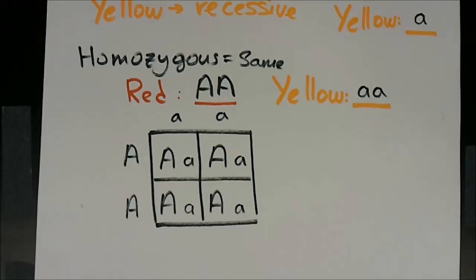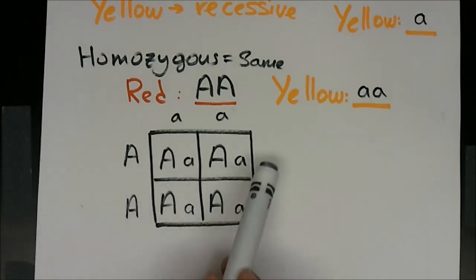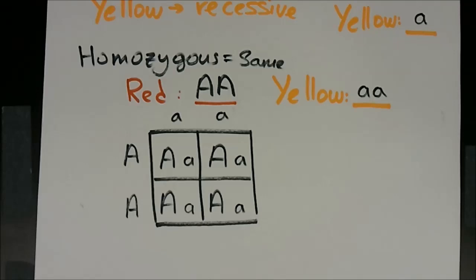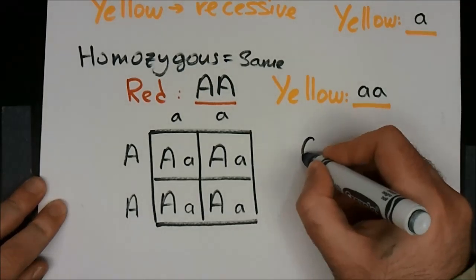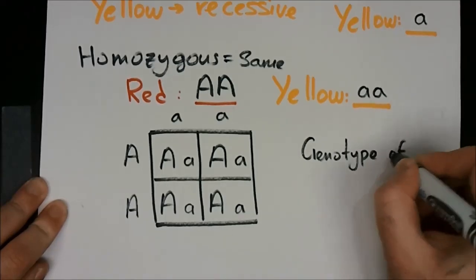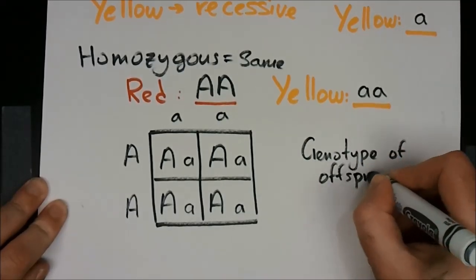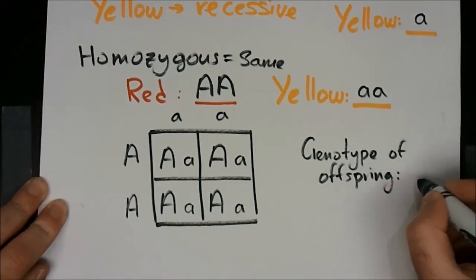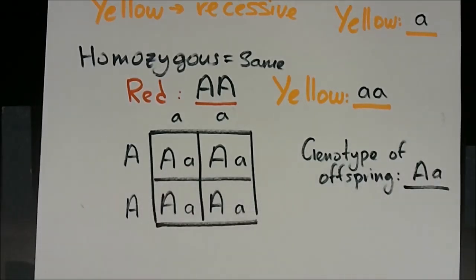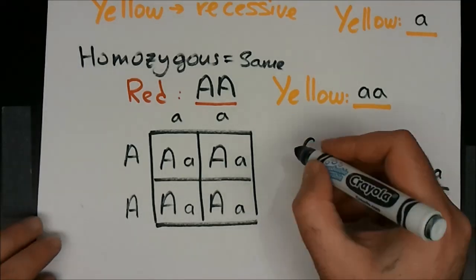Question two asks: what is the genotype of all the offspring? The offspring are the combinations inside the boxes. All four offspring are big A little a — that's the genotype of every offspring from this cross.